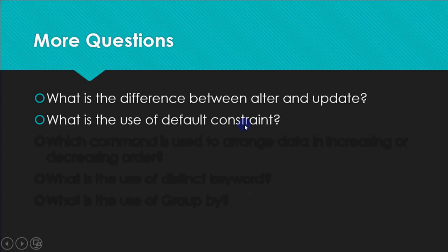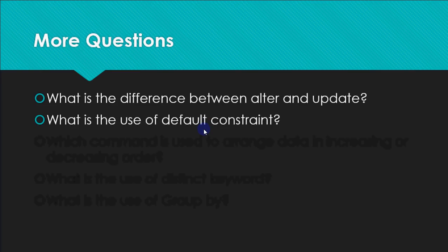The DEFAULT constraint: when inserting a row, if you don't give a value for a column it is null by default. If you want a column to have a specific value by default, you use DEFAULT. For example, if you want every newly admitted student to have class set to 'Nursery', you define the column as: class VARCHAR(10) DEFAULT = 'Nursery'.